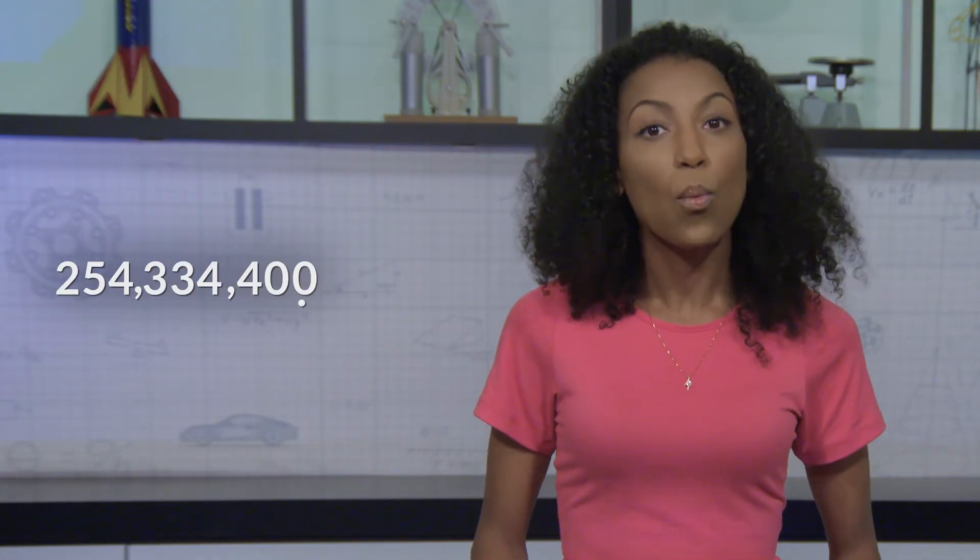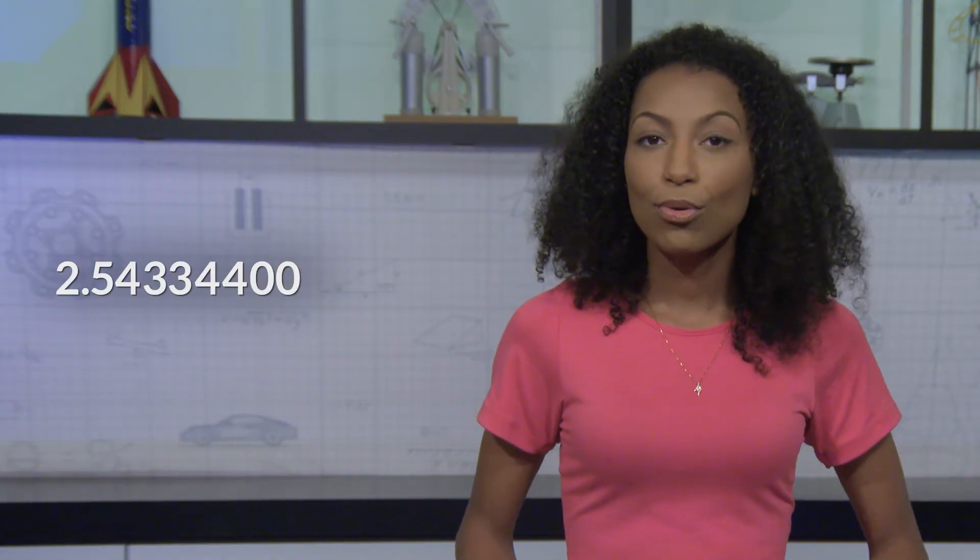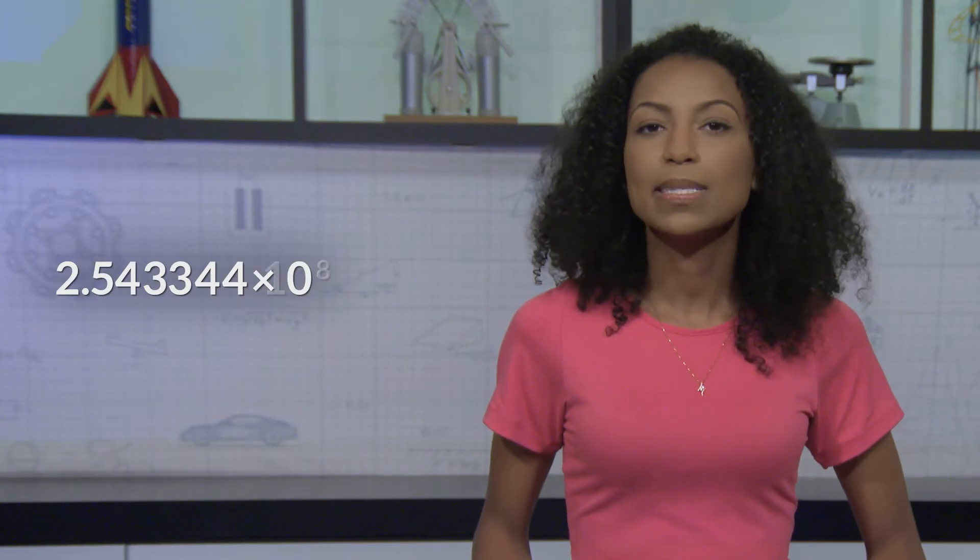Let's look at how we convert a number into scientific notation step by step. The first thing is to find the decimal. Let's look at this number: 254,334,400. See the decimal to the right of the ones place? To put that in scientific notation, you move that decimal to a place where you have a number greater than or equal to 1 but less than 10 — that would be the 2. So let's count how many places we move the decimal: 1, 2, 3, 4, 5, 6, 7, and 8. We write our number as 2.543344 times 10 to the 8th.